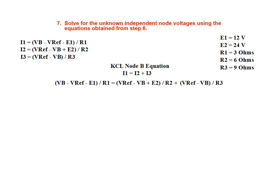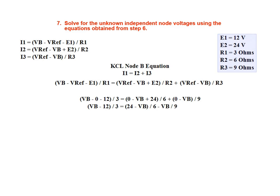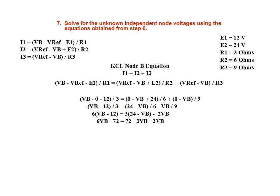In step 7, we solve for the unknown independent node voltage, Vb, using the equations obtained from step 6. We begin by substituting in our known voltages and resistance values, assigning 0 volts to Vref. We then find the lowest common multiple for the denominators 3, 6, and 9, which turns out to be 18. We multiply both sides of the equation by 18 to clear the fractions, then solve for Vb, arriving at a final result of 13.091 volts.